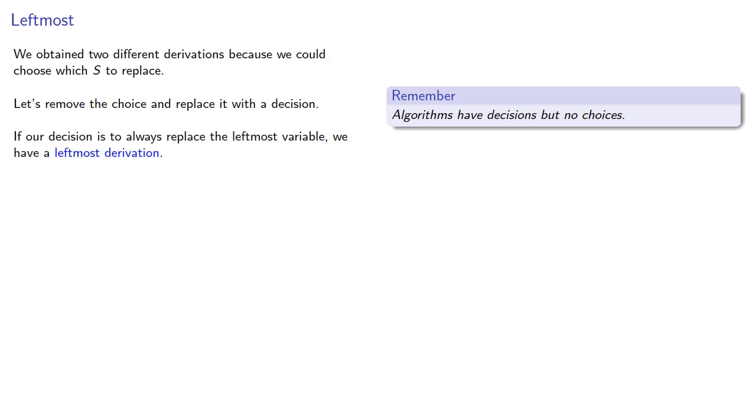If our decision is to always replace the leftmost variable, we have a leftmost derivation. We could have chosen otherwise—if we always replace the rightmost variable instead, we'd have a... let's think of a good name for this... how about rightmost derivation?